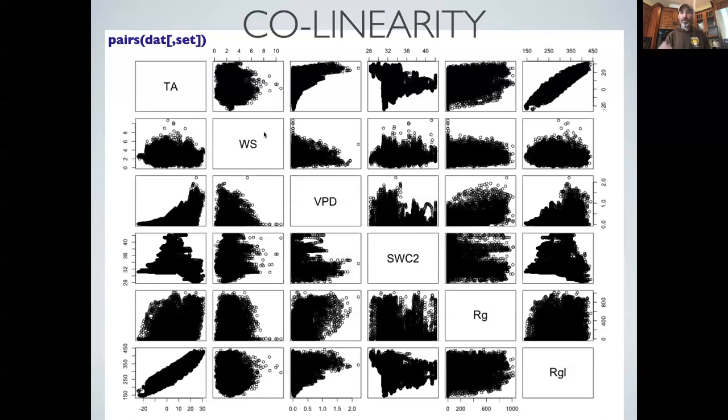And we can see from these pairwise scatter plots that there are some relationships that appear to be pretty independent. You look at the relationship between wind speed and air temperature, and it's just kind of a cloud that doesn't suggest that there's much relationship between the two.